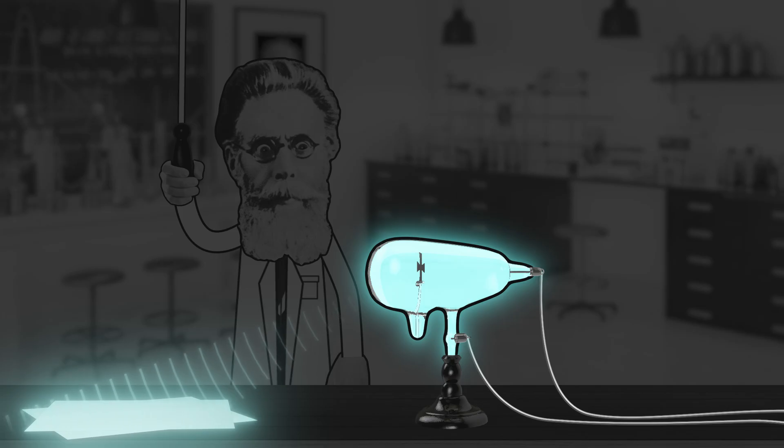Like any good scientist, he starts to play. He realizes it can pass through all sorts of things. He puts things in the way, it can pass through walls, yet he or nobody else can see it. So he's got this mysterious beam that he decides to just label X because he doesn't know what it is. And it becomes known as the X-ray.